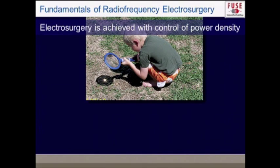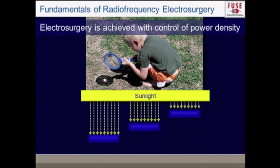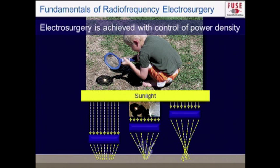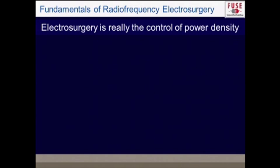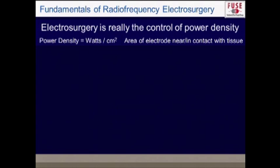At a surgical level, what you're really controlling is power density — it isn't about what label is on the output, it's about power density or current density, measured in watts per centimeter squared. Think of a magnifying glass focusing sunlight: when the focal point is right, you elevate the temperature of what you're focused on. It's the area of the electrode that is near to or in contact with tissue that determines current density.